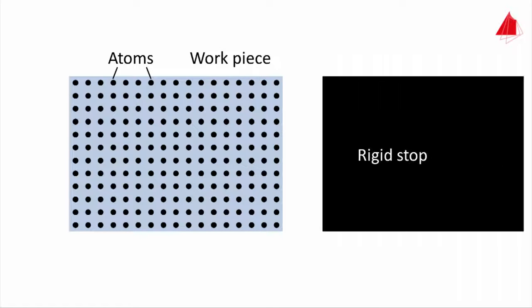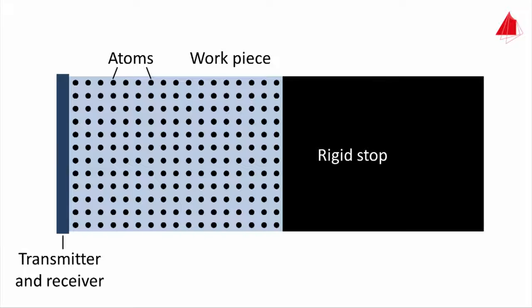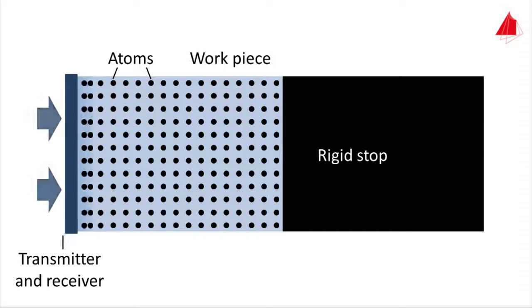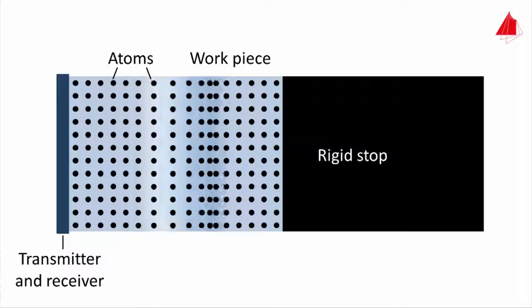To begin with, a rigid unyielding stop is attached to the right front end of the cylinder. At the left front end, a disc is installed which will be used to transmit and receive sound waves. Pushing and pulling briefly at the disc causes a longitudinal sound wave to propagate through the cylinder.